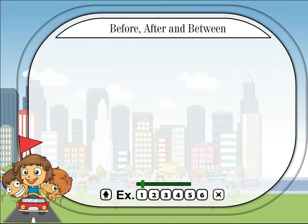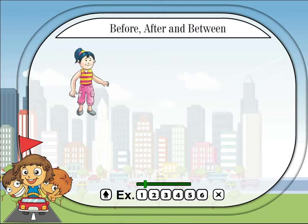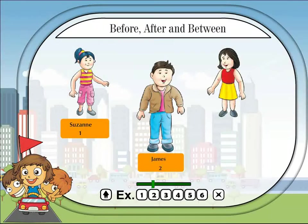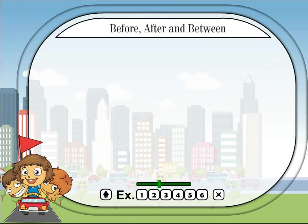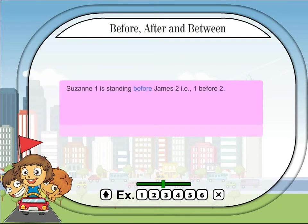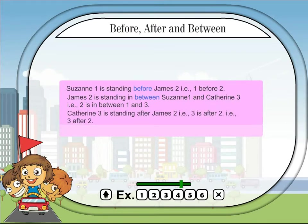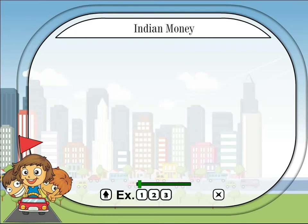Before, after, and between. Suzanne is 1, James is 2, Catherine is 3. Suzanne 1 is standing before James 2, i.e. 1 is before 2. James 2 is standing in between Suzanne 1 and Catherine 3, i.e. 2 is in between 1 and 3. Catherine 3 is standing after James 2, i.e. 3 is after 2.